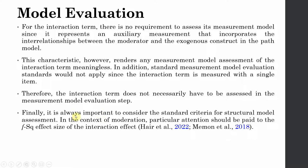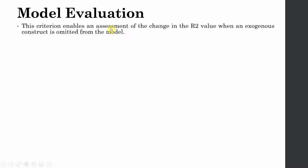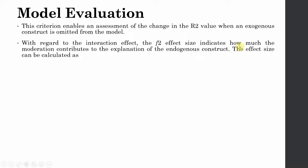It is always important to consider the standard criteria for structural model assessment. In the context of moderation, particular attention should be paid to the F-square effect size of the interaction effect. This criterion enables an assessment of the change in R-square value when an exogenous construct is omitted from the model. The F-square effect size indicates how much the moderation contributes to the explanation of the endogenous construct.